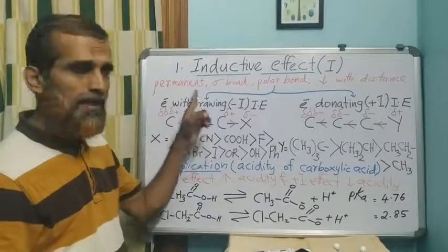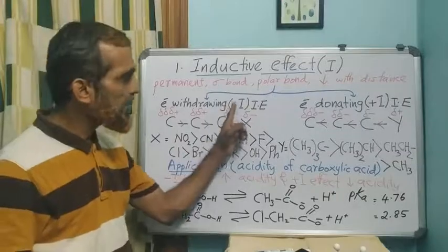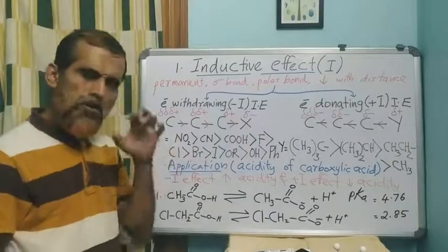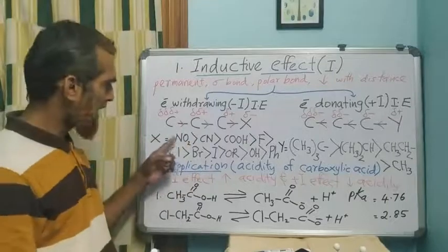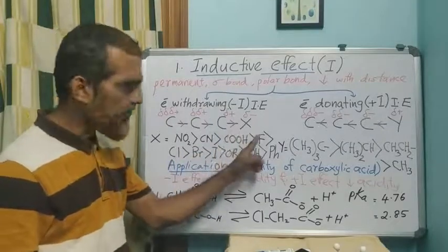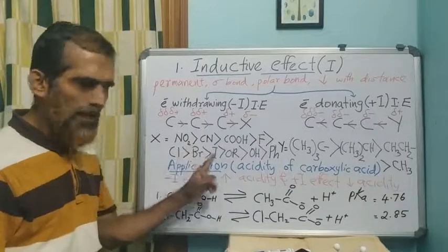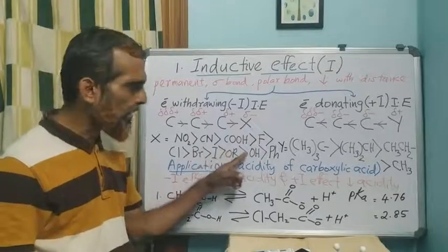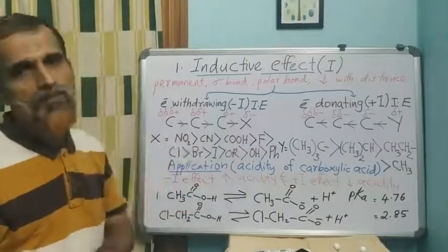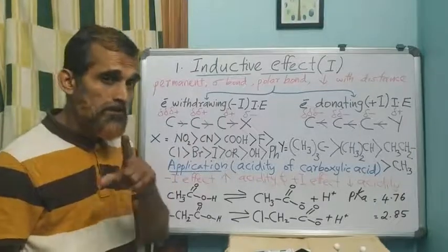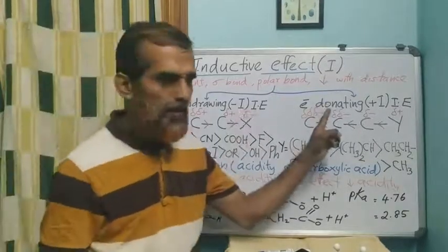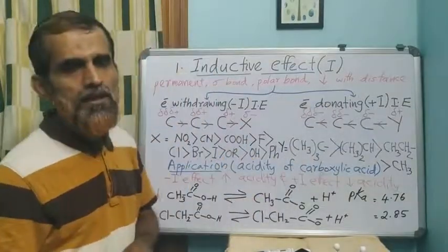There are two types of inductive effect. The first is the electron-withdrawing inductive effect, the minus I effect. Most organic functional groups fall under this category: nitro group, CN, COOH and acid derivatives, aldehyde, ketone, halogens (F, Cl, Br, I), alkoxy/ether group, OH, and phenyl group. This is a decreasing order of minus I strength, with NO2 being the most powerful.